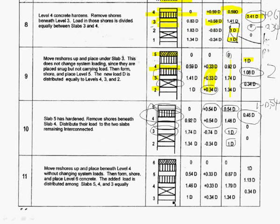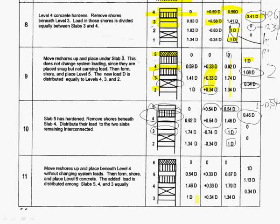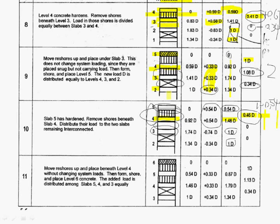One thing — the most important thing — to check whether you did it right: any time you reach a situation where a slab is supported by nothing, the weight carried by that slab should equal the shoring above it plus 1. For example, here it's 1.46D, which equals 0.46D plus 1. They should be absolutely equal. For any situation — for example here, we have 1.34D for the second floor — it should equal 0.34D plus 1. You can look at anywhere in your handouts and it will be the same. Any time you have a slab supported by nothing, the load on that slab should equal the shoring above it plus 1. It should be absolutely equal.